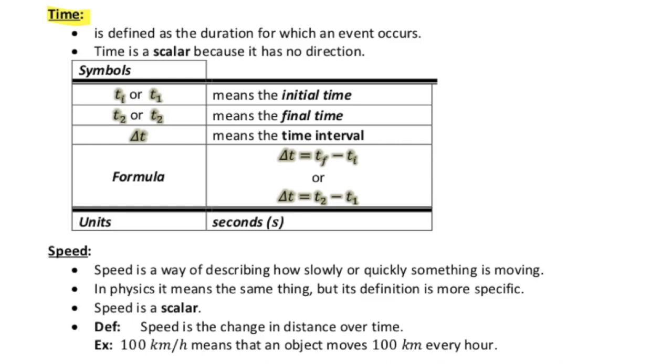Next, time. So time is defined as the duration for which an event occurs. And time is a scalar because it doesn't have any direction. And as far as we know, or at least we experience, time only goes one way and that is forward.